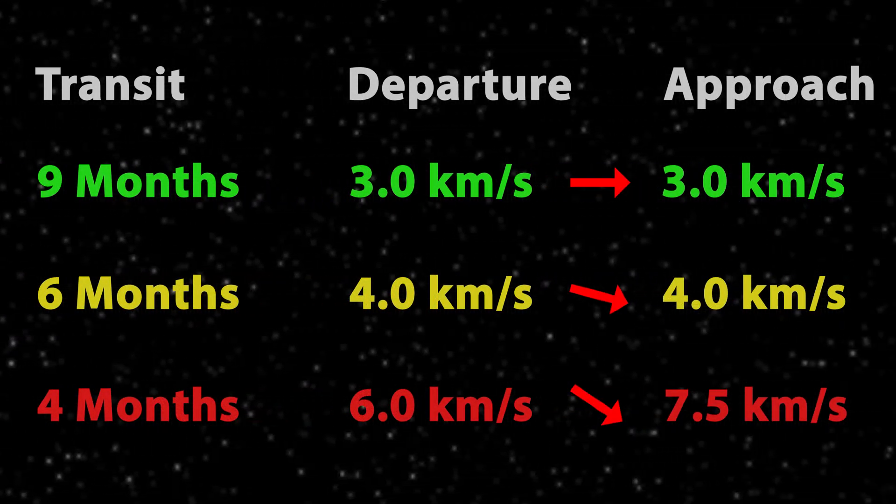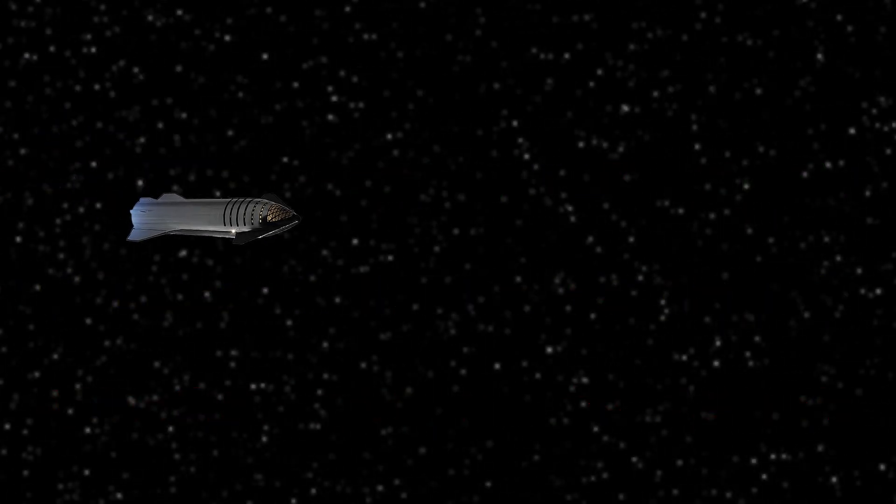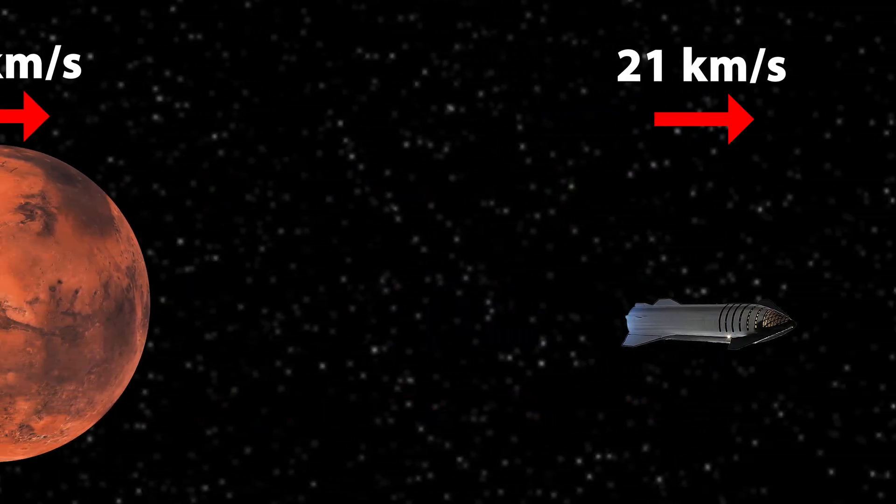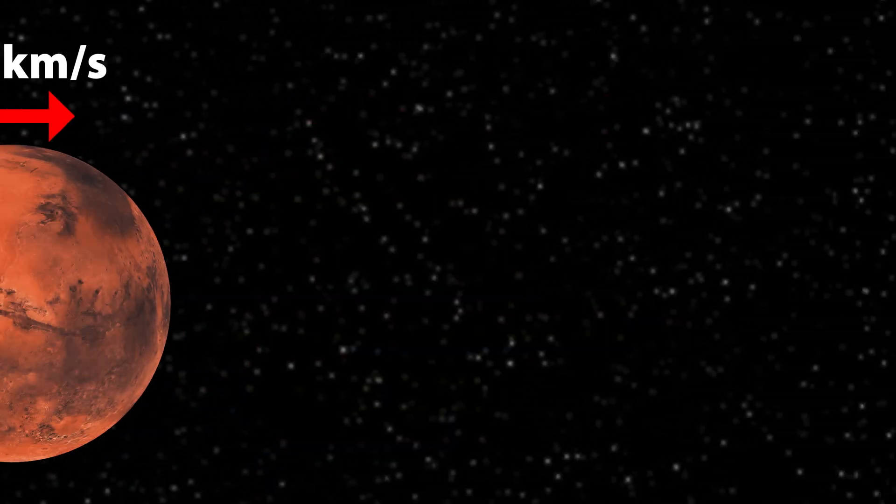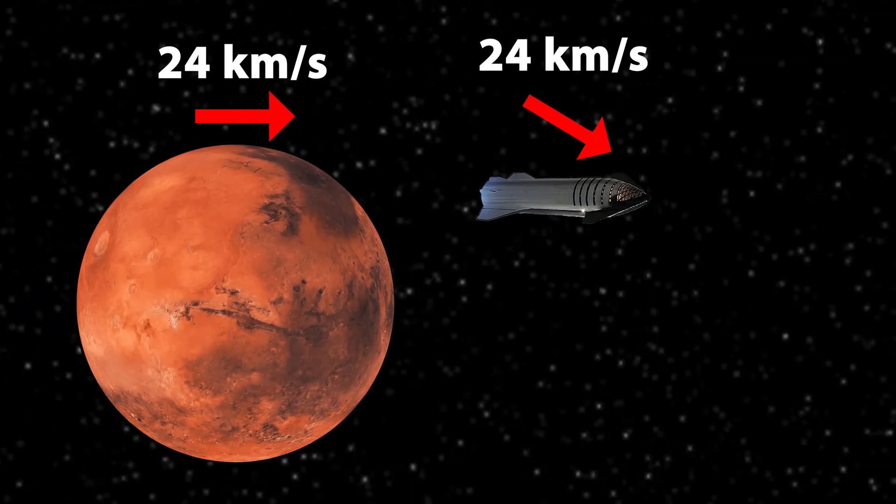This is because the Hohmann transfer to Mars is unique in the fact that the velocity vectors of the spacecraft and Mars are pointing in the same direction when they meet in Mars's orbit. On shortened transits, the velocity vectors point in slightly different directions.